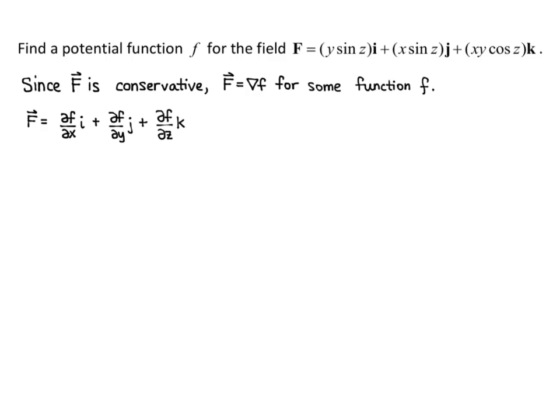In other words, the i, j, and k components are the first partial derivatives of lowercase f with respect to x, y, and z respectively. So this tells us that ∂f/∂x equals y sine of z — the i component of the given vector field is the partial derivative of the potential function with respect to x. Then ∂f/∂y equals x sine of z, and ∂f/∂z equals xy cosine of z.